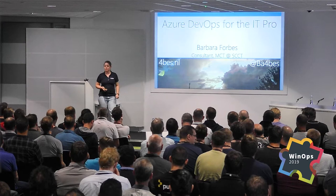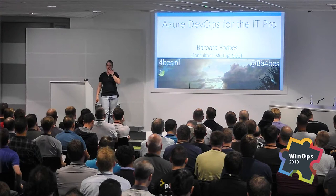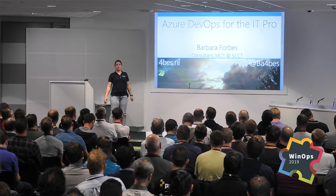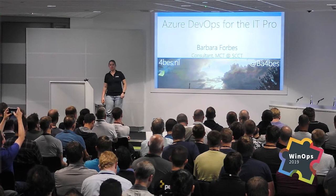My name is Barbara Forbes and I'm a consultant at SCCT working in the Netherlands. I work with Azure mostly and I focus on automation — so infrastructure as code, PowerShell and Azure DevOps. I run a blog about these subjects called 4bes.nl, and I'm also on Twitter with handle BA4BAS, which is also my handle on GitHub and GitLab.